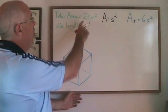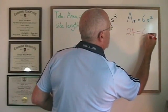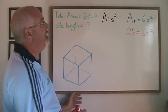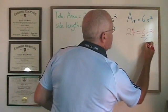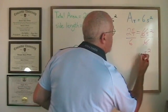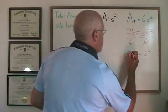So plugging the 24 into the A position in the formula we get 24 equals 6s squared. Divide both sides by 6. These cancel. S squared is isolated and is equal to 24 divided by 6 which is 4.